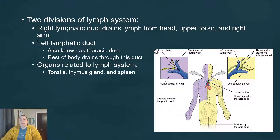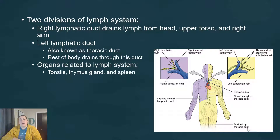Now some other organs that are related to the lymphatic system are going to be things like your tonsils — again, they're in an area where things could gain access. Your thymus gland, which is going to help train your T cells of your lymphocytes. And then also your spleen, which is a reserve of blood, and in that area we see that lymphocytes are going to be present in pretty large amounts. So the spleen also has some of that structure that the lymph nodes have.